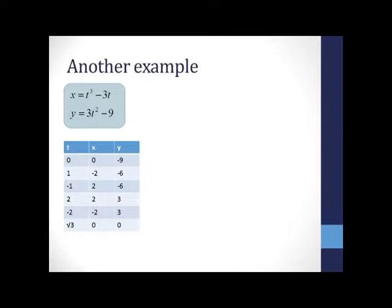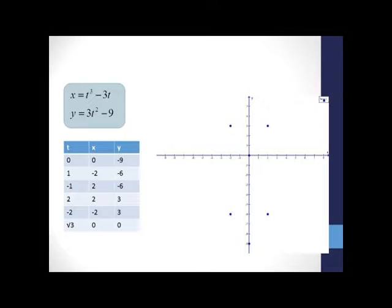Let's consider another example. This time x equals t cubed minus 3t and y equals 3t squared minus 9. We've plugged in several values for t and come up with the table shown below, and the six ordered pairs shown in the graph.